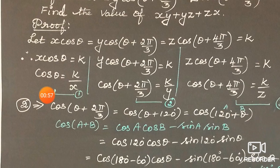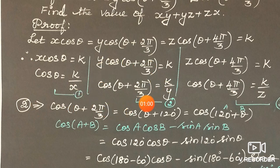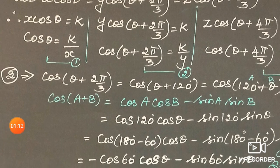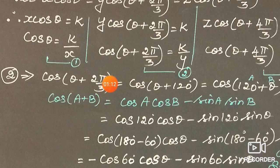Now, equation 1 has cos θ, equation 2 has cos(θ + 2π/3). This is in radians; converting to degrees by substituting π = 180, we get 180/3 = 60 degrees, and 2 × 60 = 120 degrees. So cos(θ + 120°).